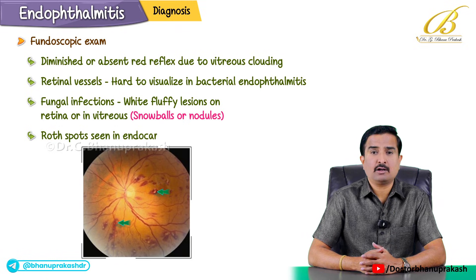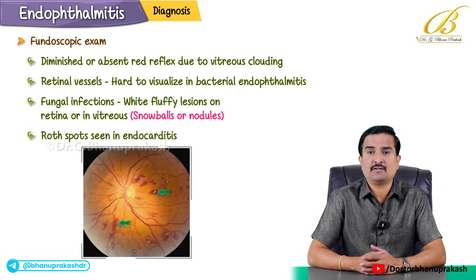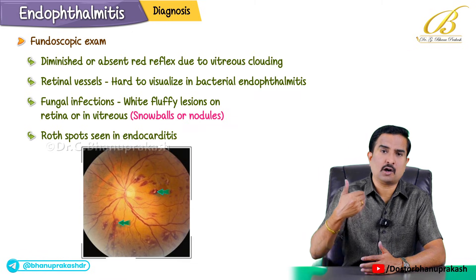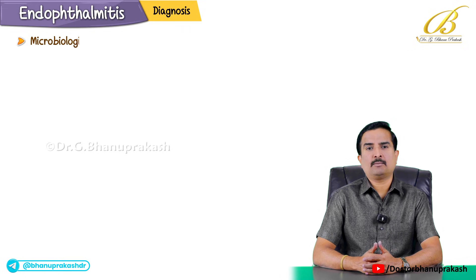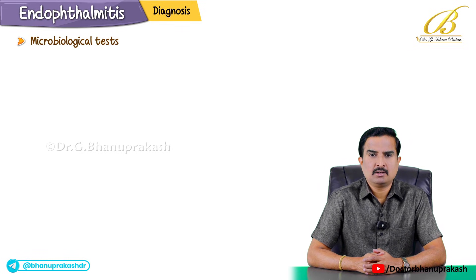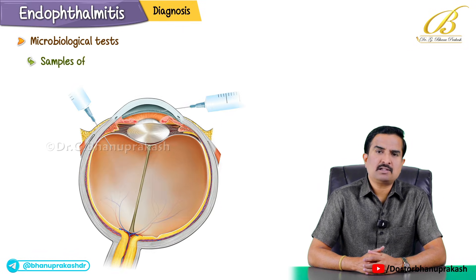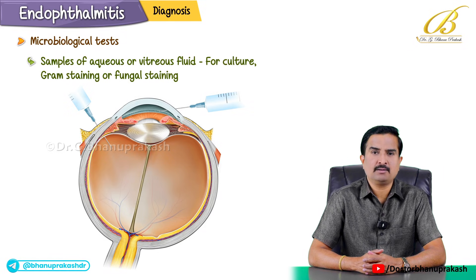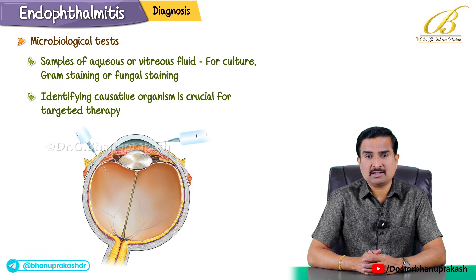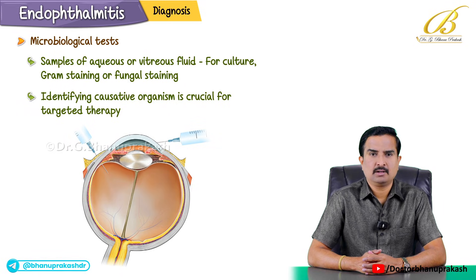Roth spots can occasionally be seen in the setting of systemic disease like endocarditis, indicating endogenous infection. Microbiological tests are also important — samples of aqueous or vitreous fluid can be taken for culture, Gram staining, or fungal staining. Identifying the causative organism is crucial for targeted therapy.